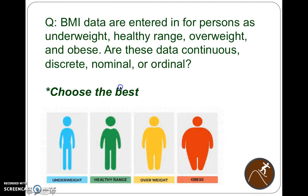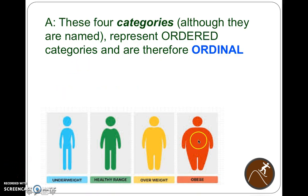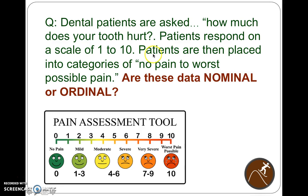For the BMI example: data are entered for persons who are underweight, healthy range, overweight, and obese. Are these data continuous, discrete, nominal, or ordinal? Not continuous — there are no numbers. Not discrete — there are no whole-number counts. The categories have names, but there's obviously an order. The best answer is ordinal, because there's a definite order from underweight to healthy to overweight to obese — there's a clear pattern.